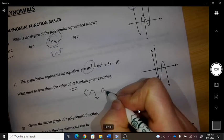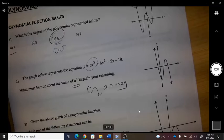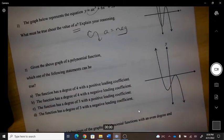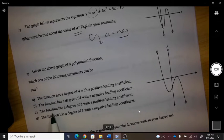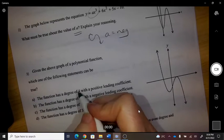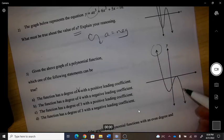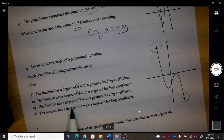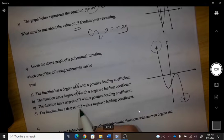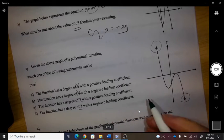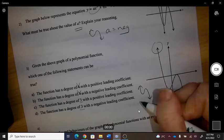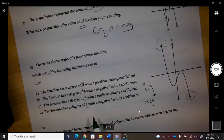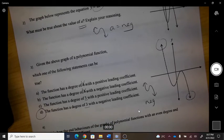we know that a is negative. Given the graph, which is true? The polynomial has a fourth degree? No, because these go in opposite directions, so it's a third degree. What kind of leading coefficient does it have? It would be a negative coefficient, so it's third degree with a negative leading coefficient.